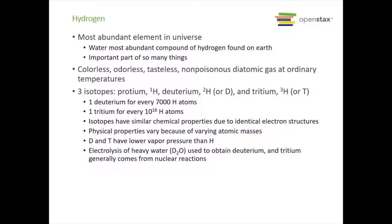The isotopes all have very similar chemical properties because they have identical electron structures, but their physical properties vary because of their differing atomic masses. Tritium and deuterium are much heavier than regular protium, and they have lower vapor pressures. Electrolysis of heavy water, D2O, can be used to get deuterium, and we get tritium generally from nuclear reactions. Tritium is actually radioactive.